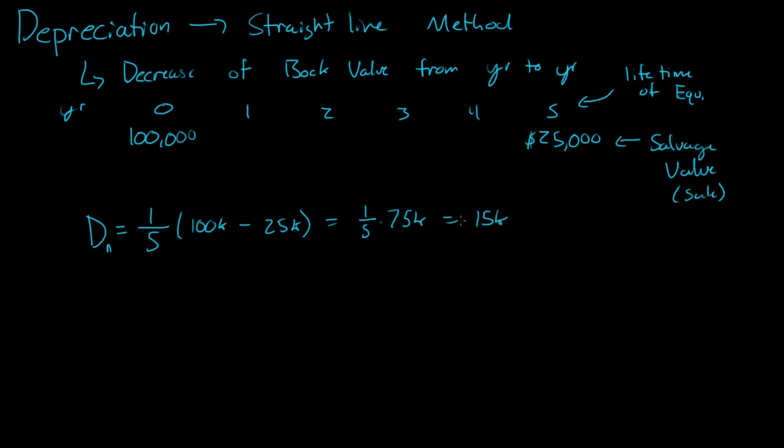When we bought the machine, the book value is $100,000. The moment we bought it, it's still worth $100,000. However, after one year, it will lose $15,000 in value, so $100,000 minus $15,000 is $85,000. The book value after one year is $85,000. After two years, it's $85,000 minus $15,000, which is $70,000.